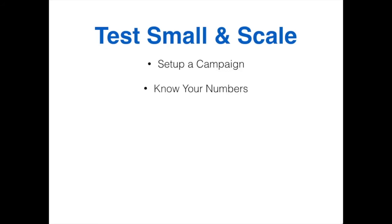Then you need to know your numbers. This means knowing how many sales you get for every 100 or 1,000 clicks. For example, if you get one sale per 100 clicks, you know that for every 100 clicks you get 30 leads and one becomes a sale. So if you spend $100 for 100 clicks and you're only making $50, you know you're overspending — or you know that for every $100 you make $200. That's knowing your numbers.